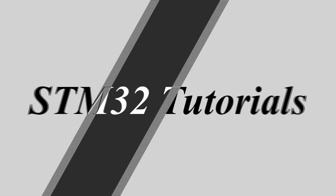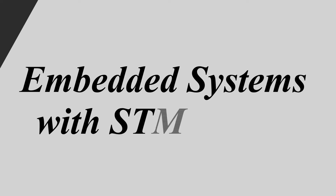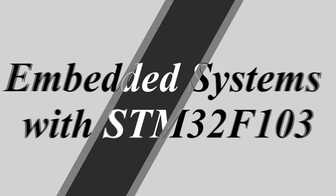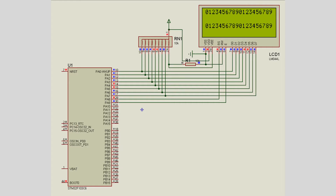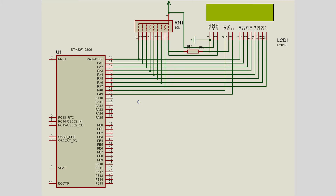Hello friends, welcome back to STM32 tutorials. I'm Ajinkya and we are here to learn embedded systems on the STM32 controller. In the previous video we saw how to interface an LCD with the STM controller but we missed a few points, so we will be covering those points in this video. In the last video we only displayed numbers on the LCD; in this video we will display characters along with numbers. The interface circuit is the same as the last video, only the 20x4 LCD is replaced with a 16x2 LCD. The rest of the connections are the same.